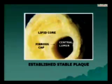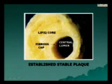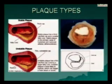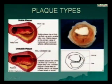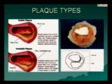A fatty streak keeps growing day by day until an established plaque is formed. Plaques are broadly classified into two types: stable and unstable. A stable plaque has a thick calcified cap and a smaller fatty core. An unstable plaque has a thin and vulnerable cap — created by the various metabolic changes described — which can rupture and cause acute coronary syndrome to happen.